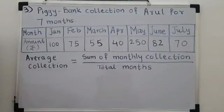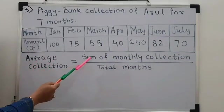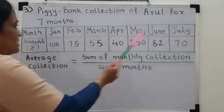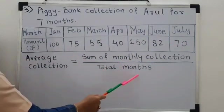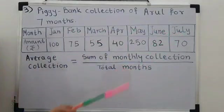We have to find average collection of Arun. And for average collection, we know now the formula is sum of monthly collection. Means, I have to add all these amounts together divided by total number of months. So, I have from January to July, I have 7 months.